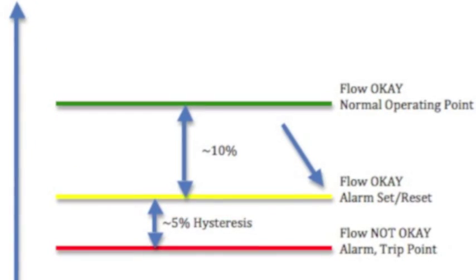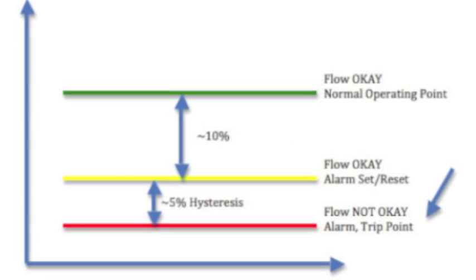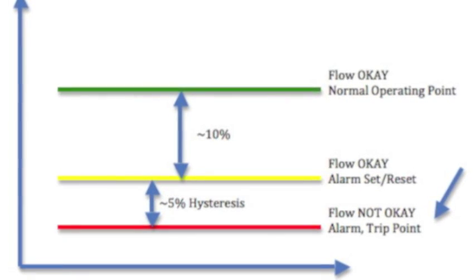In this diagram, the flow okay alarm set yellow line is 5% above the flow not okay alarm trip point.